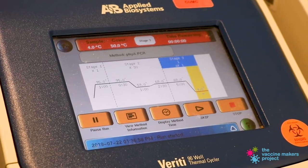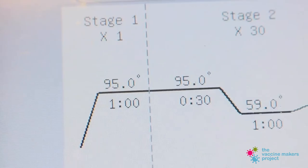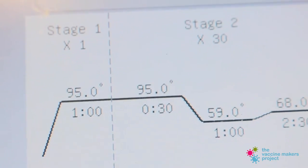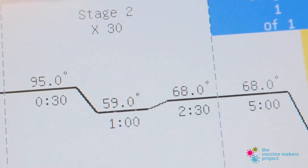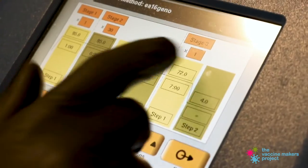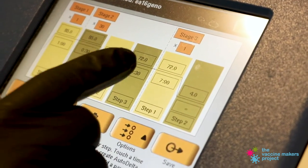The most basic function of a PCR machine or thermocycler is to rapidly raise and lower the temperatures of your sample tubes to allow the polymerase chain reaction to take place.